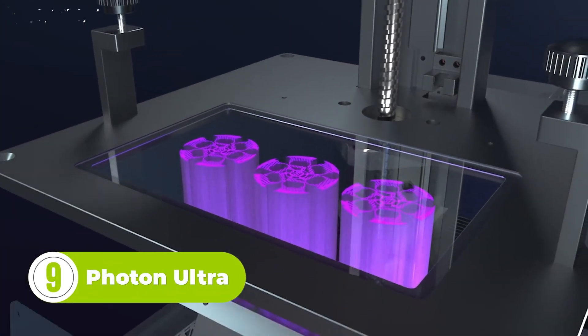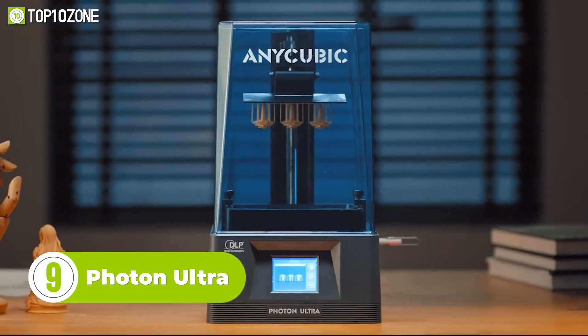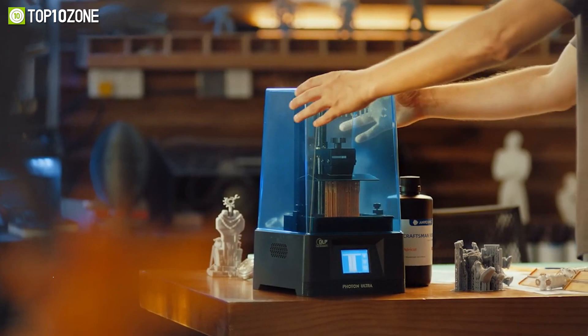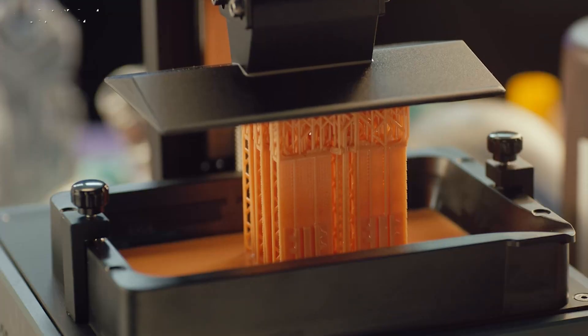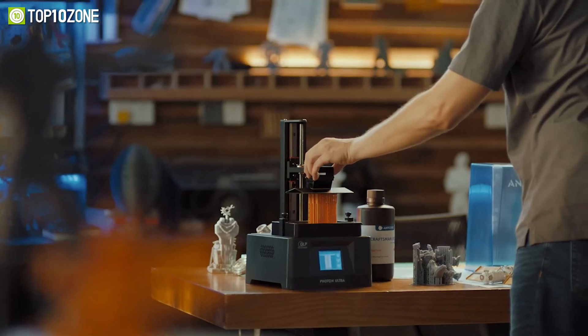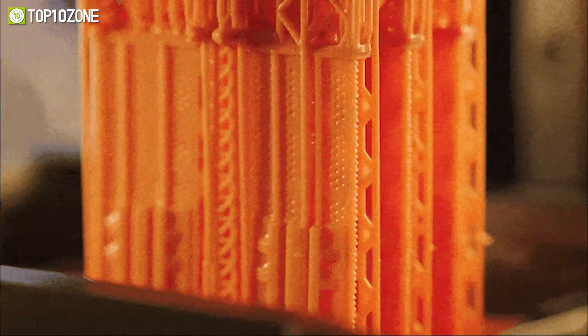AnyCubic Photon Ultra 3D printers are an excellent option for anyone seeking an affordable experience. This device provides pixel-perfect prints down to the micron for lifelike precision in the smallest details, and its blazing-fast optics engine speeds up the printing process to just 1.5 seconds per layer.